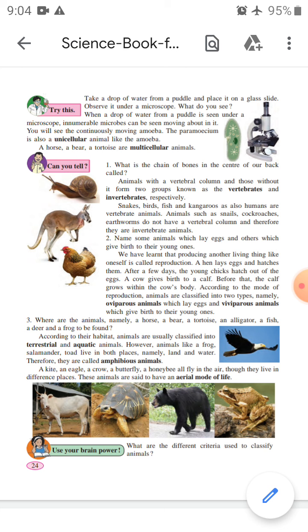We have learned that producing another living thing like oneself is called reproduction. A hen lays eggs and hatches them. After a few days, young chicks hatch out of the eggs. A cow gives birth to a calf. Before that, the calf grows within the cow's body. According to the mode of reproduction, animals are classified into two types.